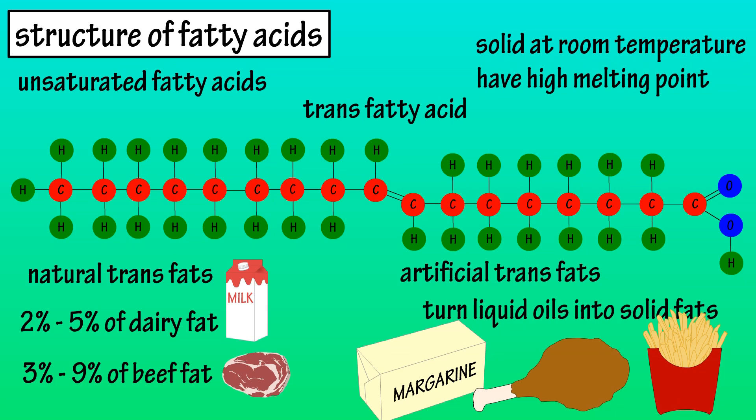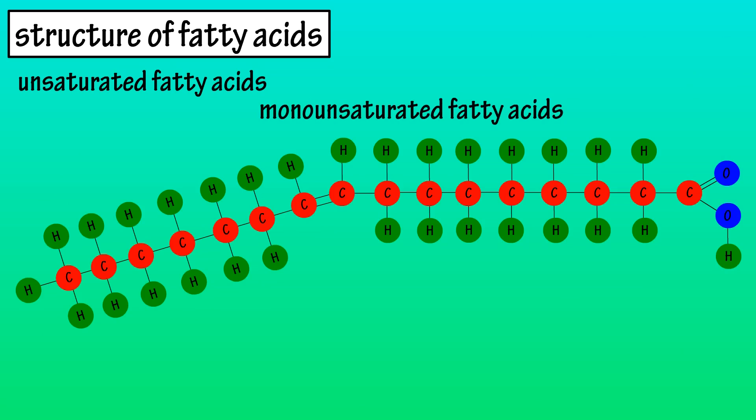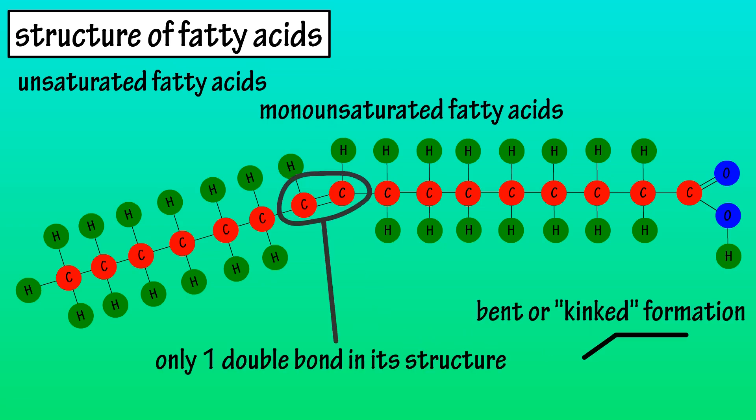Monounsaturated fatty acids have a cis molecular formation where the hydrogen atoms are on the same side of the double bonded carbon atoms. This gives it a bent or kink-like formation. Monounsaturated fats have only one carbon-carbon double bond in their molecule. They are usually liquid at room temperature and have lower melting points than saturated and trans fats.